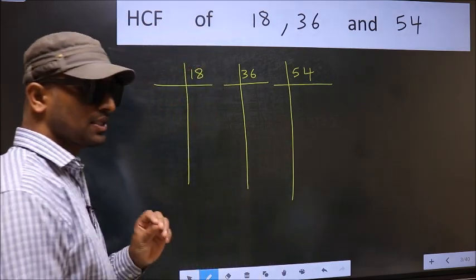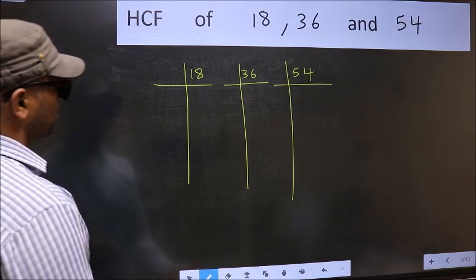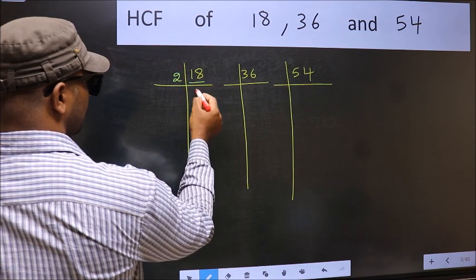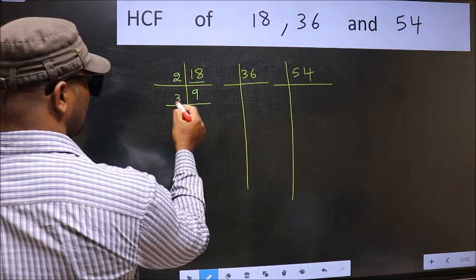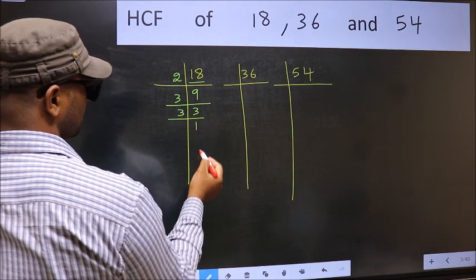This is your step 1. Next, here we have 18. 18 is 2 times 9. Now 9 is 3 times 3. Now 3 is a prime number, so 3 times 1.